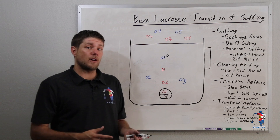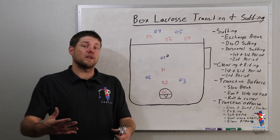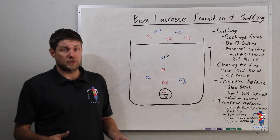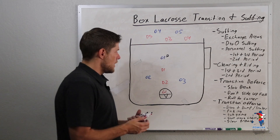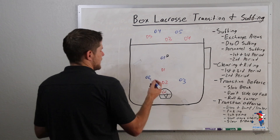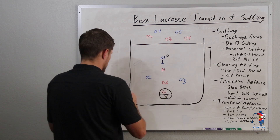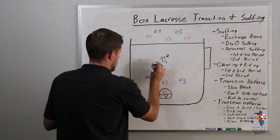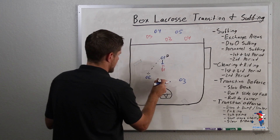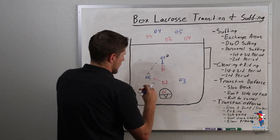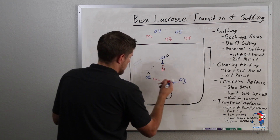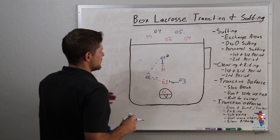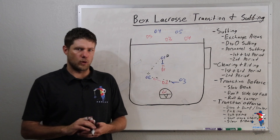As we move into our transition offense, the first thing that we can do — which everybody knows and usually practices quite a bit — is we can use our draw and dumps. Whether we have a 2v1, a 3v2, a 4v3, if we have any type of advantage, we want to draw the defensive player, move the ball, make sure we're trying to get to the front of the cage, draw again, move the ball, and try to get a 3v2 to become a 2v1 to become a 1v0 with the goalie.